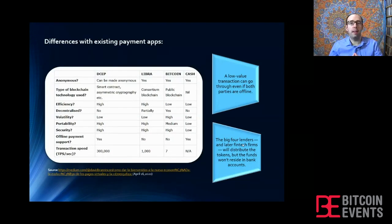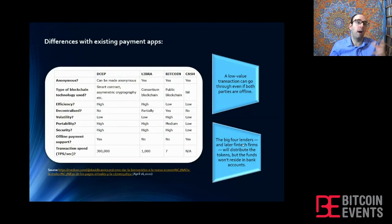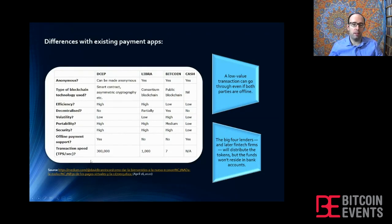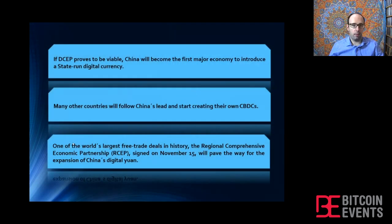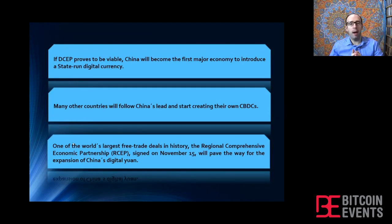This is why the US has finally decided to start analyzing the idea of a digital US dollar as well, even though before they didn't want to — they cannot let China be so advanced without doing much about it. In terms of technical specs, the transaction speed is very fast and the digital yuan is going to support offline payments, which is very important. China, if this proves viable — and I'm pretty sure it will — is going to become the first major economy to introduce a CBDC.